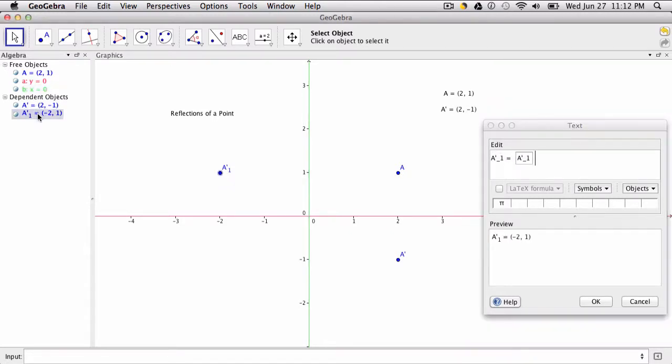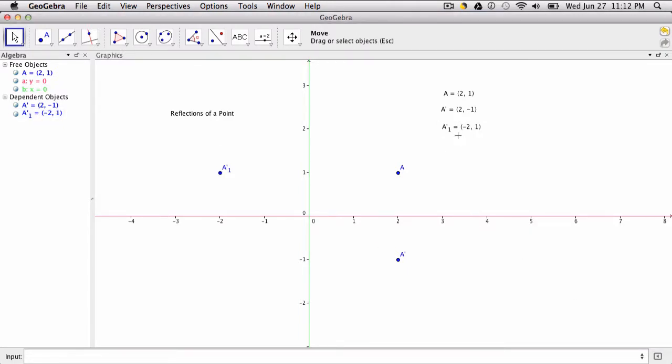And last let's get A prime sub 1. So we type in A prime underscore 1 equals and then click that point and that pops up as well. And notice as I move these points, of course the reflections will also move so all the point values should be changing here in the text automatically.